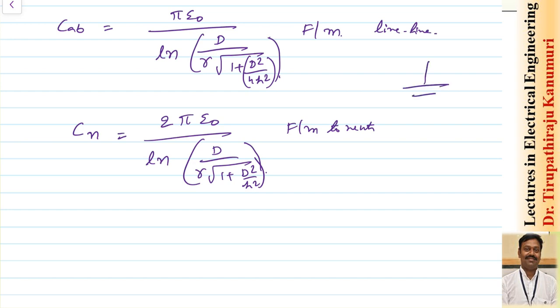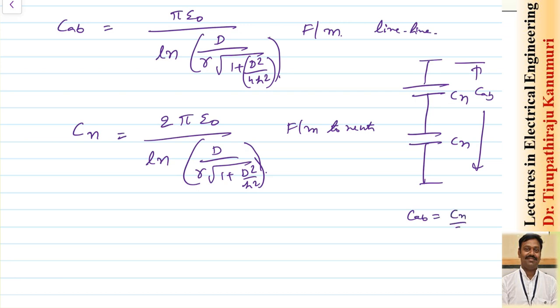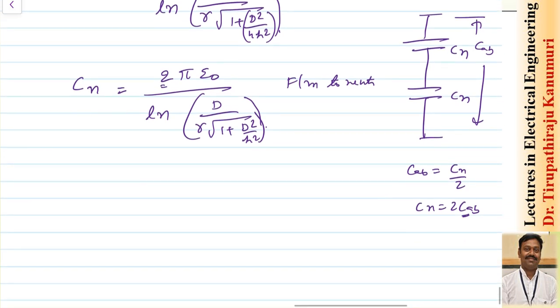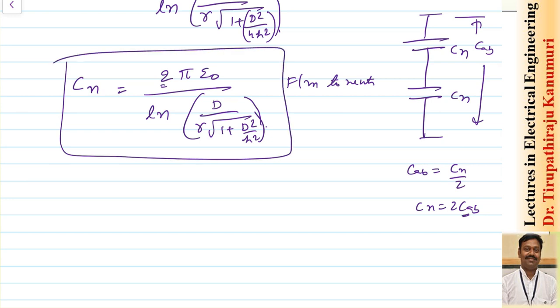Let me draw this: this is Cn and this is Cn, so total value will be equal to CAB. If you are taking Cn, the two Cn are the same, so CAB is equal to Cn divided by 2, or otherwise Cn is equal to 2 times CAB — that is why I have multiplied with 2. So this is my final equation; the effect of earth is considered here. You can see that in the normal case we have derived it as d over r, but here one extra term is coming: √(1 + d²/h²) multiplied with r.